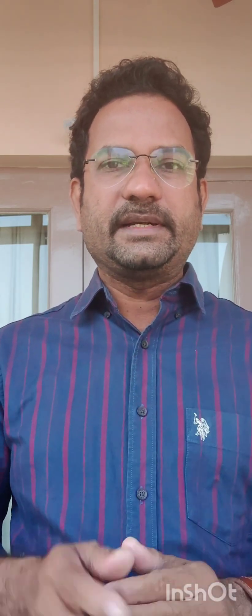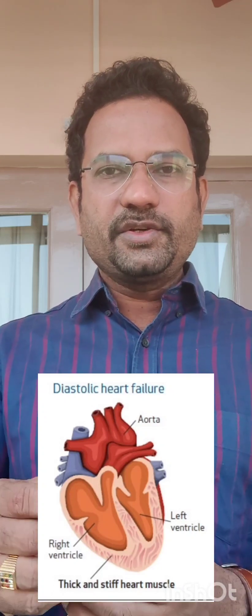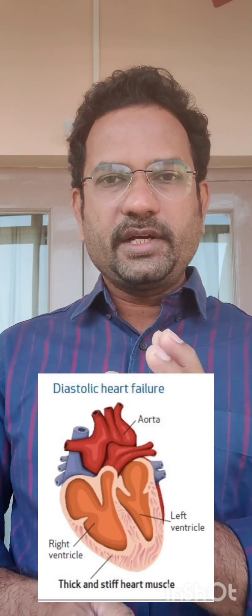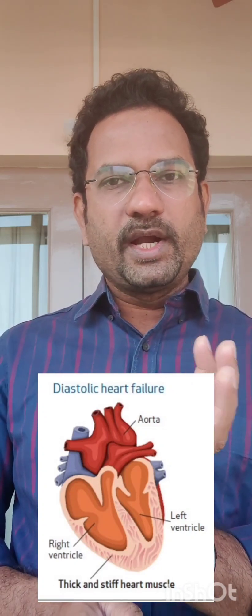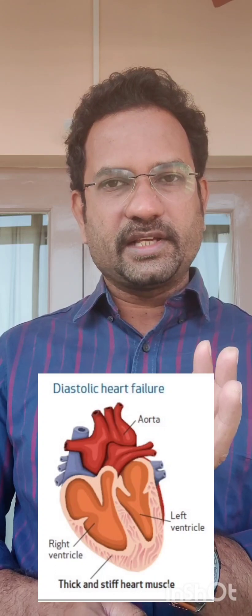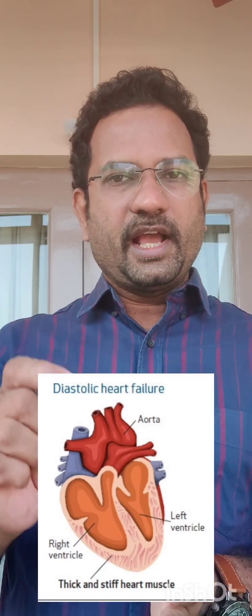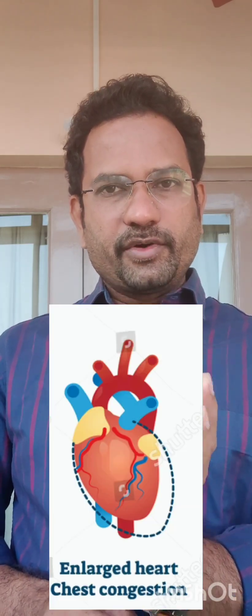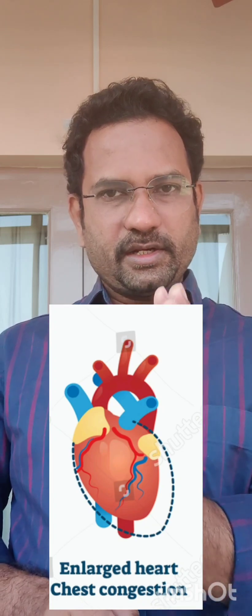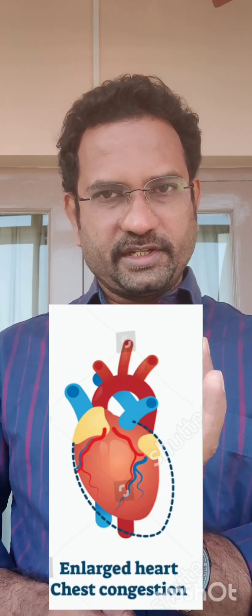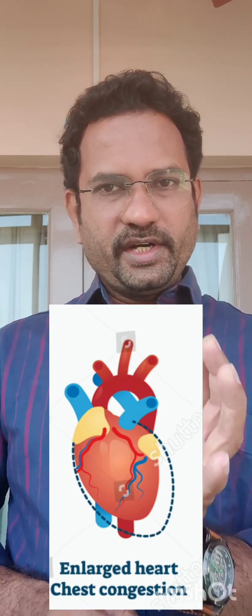The second type is diastolic dysfunction, which means the heart is not adequately relaxing. Diastolic means relaxation. Why does it happen? It happens due to cardiac hypertrophy — the cardiac heart chamber size is increased. When the size is already increased, it cannot relax further. This is called diastolic dysfunction.